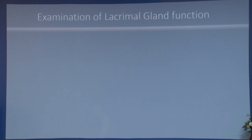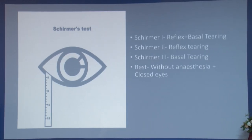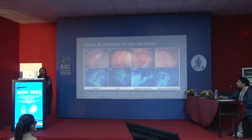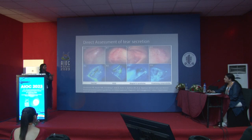Moving to lacrimal gland dysfunction — the aqueous deficient component. We all know about Schirmer's test. Second is tear meniscometry. Third is direct assessment of tear secretion, something I came across while preparing this talk: we elevate the lateral part of the upper lid and can visualize the openings of the palpebral lobe of the lacrimal gland, as indicated by the arrows in the slide.